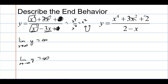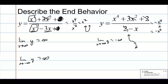Now what about this one? The lower-order terms don't matter when talking about extremely large values of x. So this reduces to negative x to the fourth over x for large values of x, which simplifies to negative x to the third. Negative x to the third graphs something like that — so the limit as x approaches infinity of y is negative infinity. This is going down, and the limit as x approaches negative infinity of y is positive infinity; as we go to the left, the graph is going up.